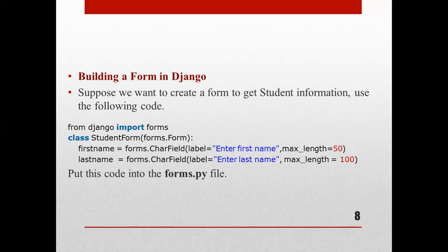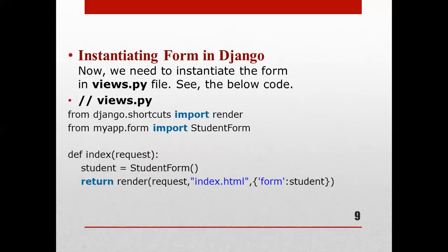After building the form, we need to instantiate the form in views.py. We write: from django.shortcuts import render, then from myapp.forms import StudentForm, since we created the forms.py file inside the myapp directory.